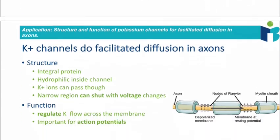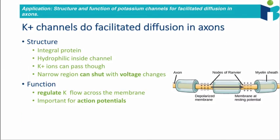How does this apply to facilitated diffusion in axons? Well, in axons, which are the parts of the neuron able to launch action potentials, you have potassium channels. Potassium channels are able to open in response to changes in voltage across the membrane of the axon. And when this happens, potassium can flow out of the axon.